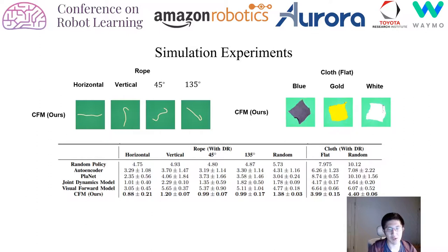Here we show some simulation results from our experiments. On the top row, we have actual planning trajectories with different given goal states for rope and different cloth tasks — different goals for rope and the same cloth spreading task but for different colored cloths. Below that, we show quantitative evaluations demonstrating that our method works significantly better than the baselines, both in planning performance and in generalization to different goal states.